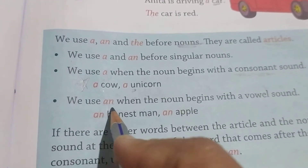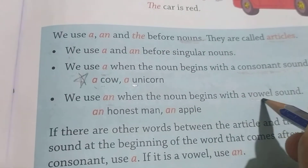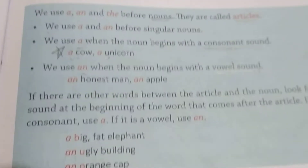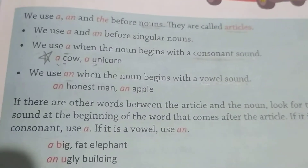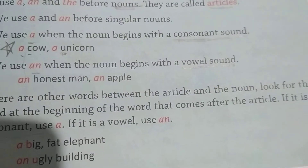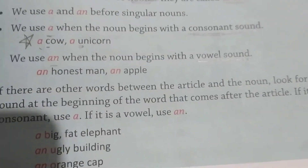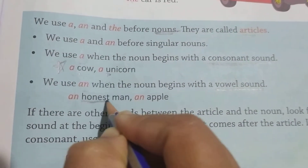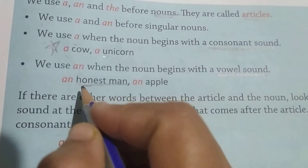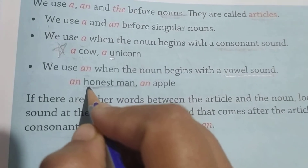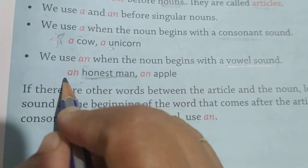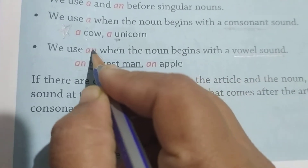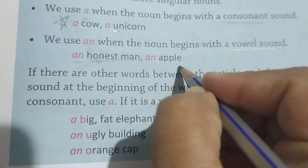We use 'an' when the noun begins with a vowel sound. Vowel sound — bhale hi woh consonant se shuru hota ho, lekin agar sound uska vowel ka aa raha hai toh hum usme 'an' lagaenge. Jaise 'an honest man' — iska pronunciation 'honest' nahi, 'onest' hai. 'H' silent hai. So 'an honest man' — yahan 'an' laga because the sound is 'onest'. Right? An apple.